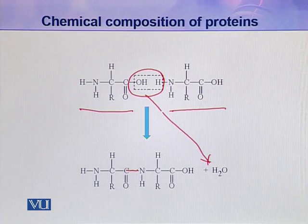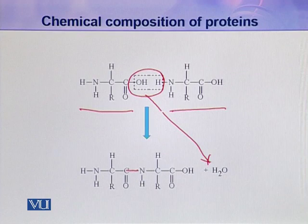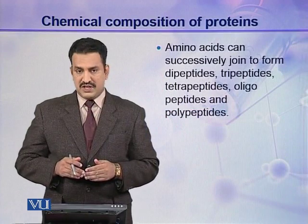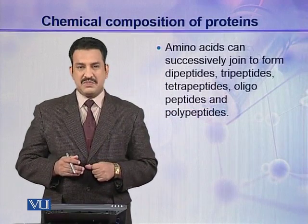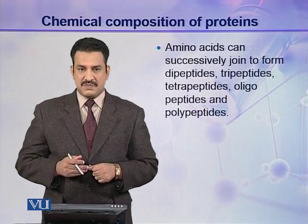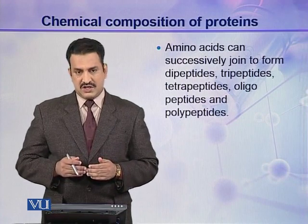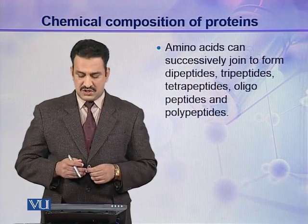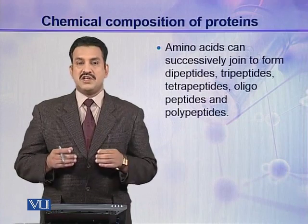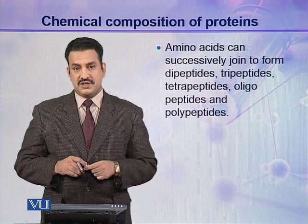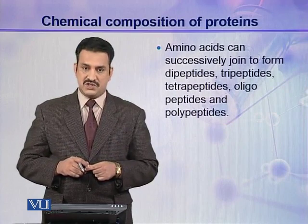Similarly, a third, fourth, fifth, and so on — other amino acids can also join to make a long chain. Amino acids can successively join to form dipeptides, tripeptides containing three amino acids, tetrapeptides containing four amino acids, oligopeptides containing a few amino acids, and polypeptides containing many amino acids.